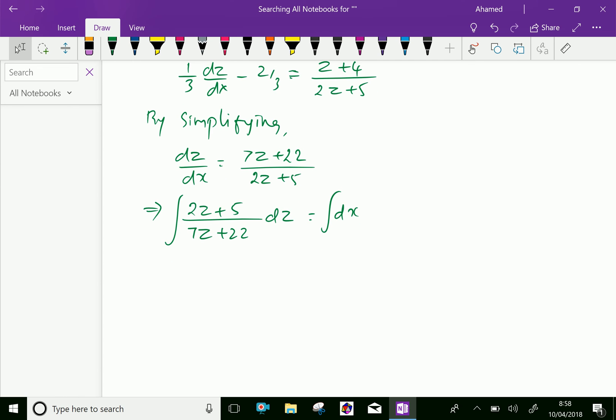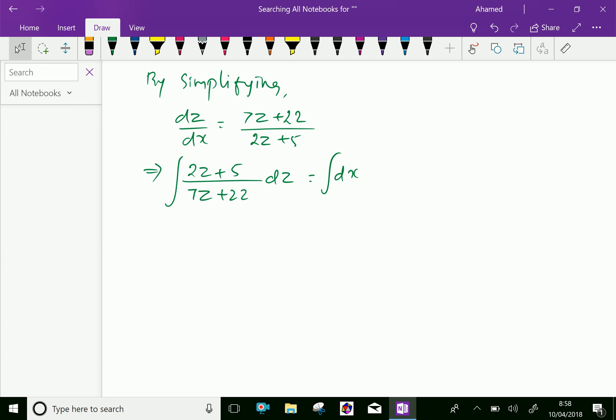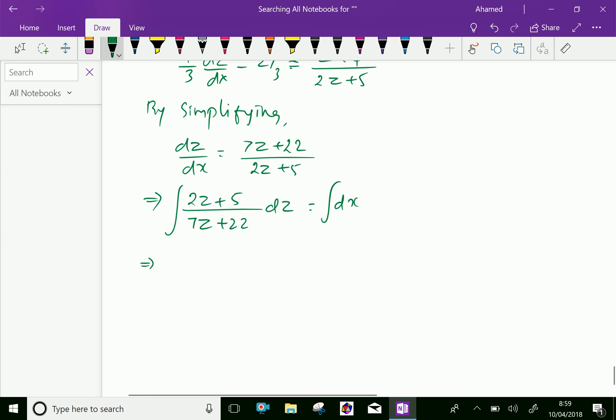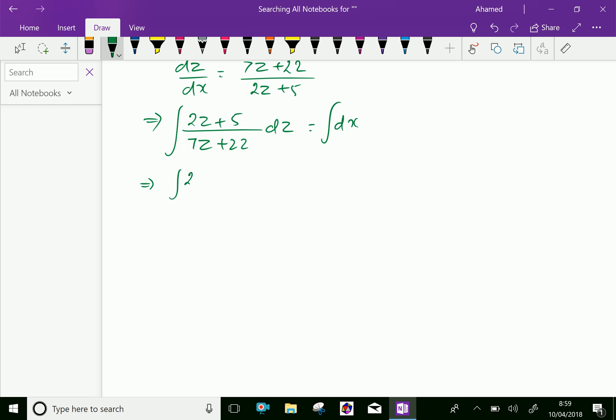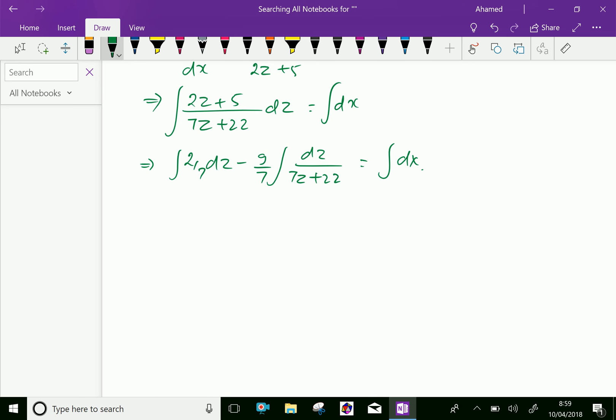By partial fractions, we are getting integral of (2/7)dz minus (9/7) integral of dz/(7z + 22) equals integral dx. That is, (2z + 5)/(7z + 22) is split as (2/7) minus (9/7) times (1/(7z + 22)).